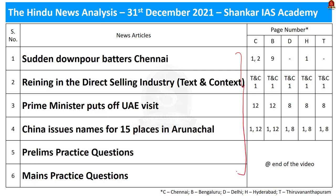The first article is about the sudden downpour that happened yesterday in Chennai. Under this article discussion we are going to see the different types of precipitation, rainfall, and finally the variation in climatical events because of the anthropogenic influences.